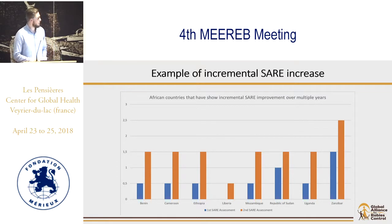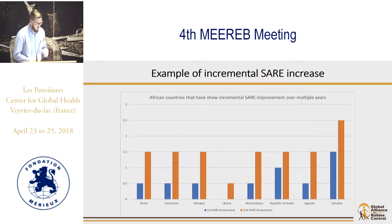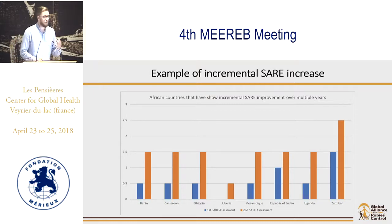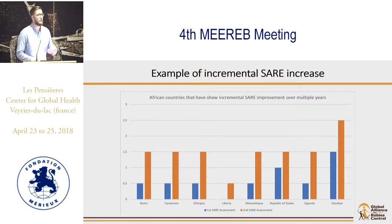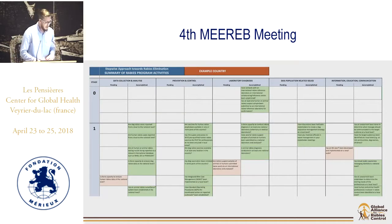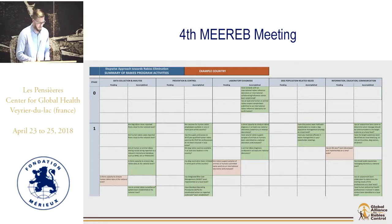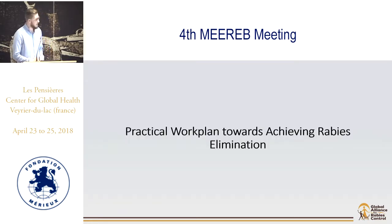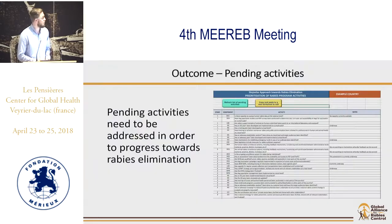Every component is broken down into accomplished and pending activities, enabling you to see within the national framework where the strengths lie and where the weaknesses can be found. For example, countries might find they have a really strong surveillance network while dog population management has not been addressed adequately. African countries that have completed the SAY over multiple instances have used these scores to demonstrate how their programs were evolving and improving.